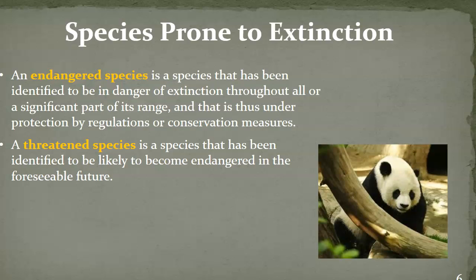Some terms we've heard before are endangered and threatened species. Endangered species are species of animals identified as being at risk of extinction, and they're protected by regulations or conservation measures. The panda and the western lowland gorilla are considered endangered species. A threatened species is one that currently is not endangered, but scientists believe that if we continue on the path we're on without making changes, they will become endangered in the foreseeable future.